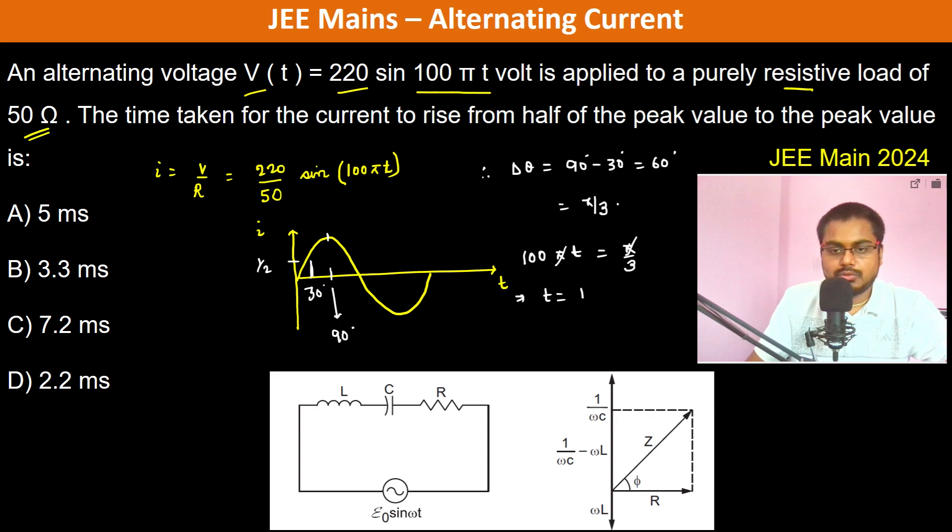So t becomes 1/300 seconds, which is 1000/300 milliseconds, which is 3.33 milliseconds. Therefore B is going to be the answer.